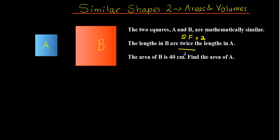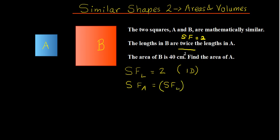The scale factor we have is the scale factor of the length — that's your 1D scale factor. Area is two-dimensional, so to find the scale factor of the area, we square the scale factor of the length. That gives you your 2D scale factor. Our scale factor of length is 2, so 2 squared is 4, meaning the area of B is four times larger than the area of A.